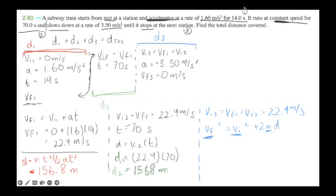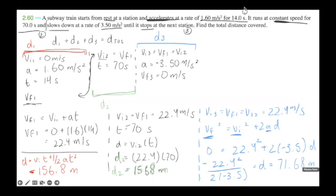But let's go ahead and plug in our values. So vf is equal to 0, vi is equal to 22.4, and then we have plus 2 times negative 3.5 times d. We don't know what d is, so we're going to isolate for that. So we're going to say negative 22.4 squared divided by 2 times negative 3.5, then we get the distance. So when we do that, the d value I'm getting is 71.68 meters. And that's our d3.